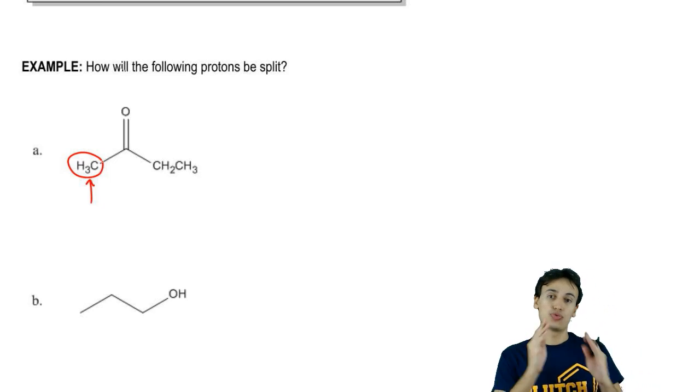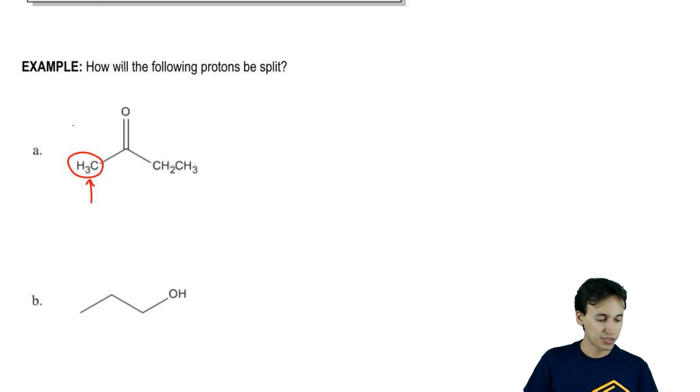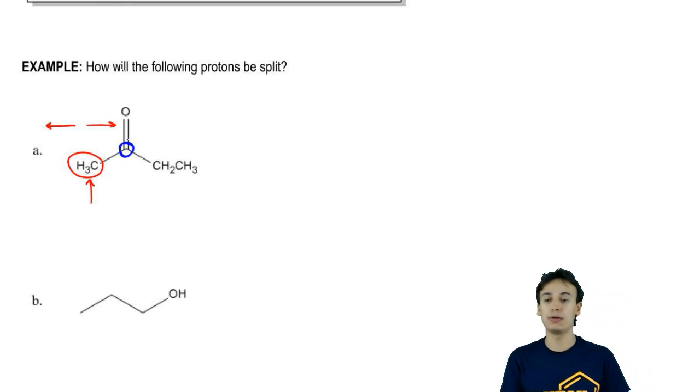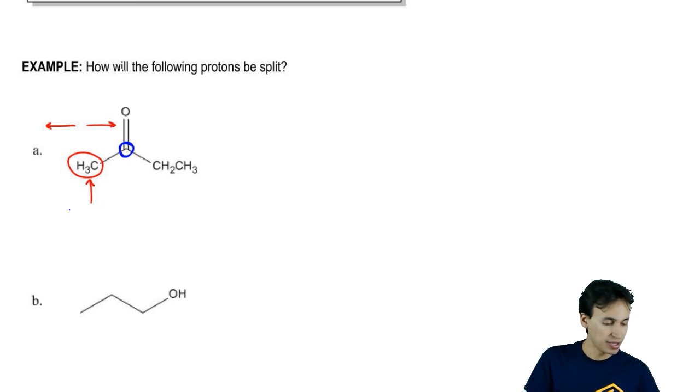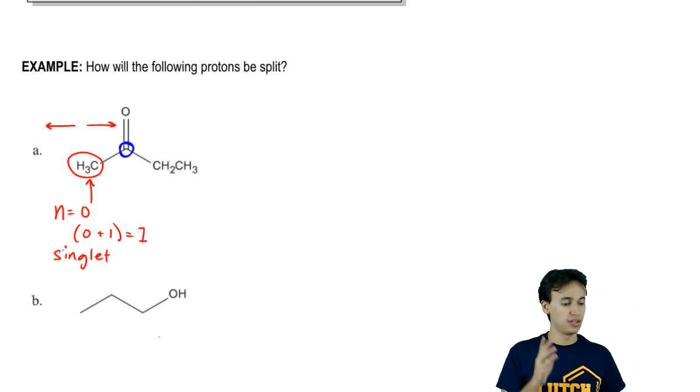What I'm wondering first of all is how many adjacent non-equivalent protons it has next to it. And what we find is first of all adjacent means it's within one space. So if I go to the left, there's nothing there. If I go to the right, I do have a carbon here. Does that carbon have any protons on it? No. So it turns out that in this case, if you go to the left, there's nothing. If you go to the right, there's nothing. So that means for red, n is equal to 0. Now using the n plus 1 rule, that means that 0 plus 1 equals 1, which means that I'm going to get a singlet. I'm going to get just a single peak for the red hydrogens.